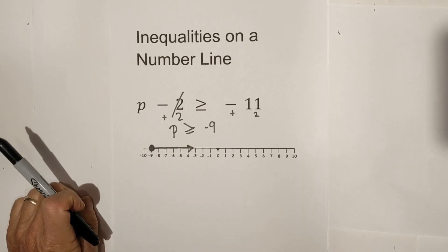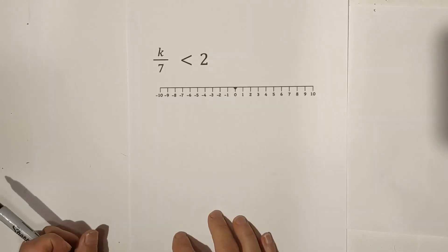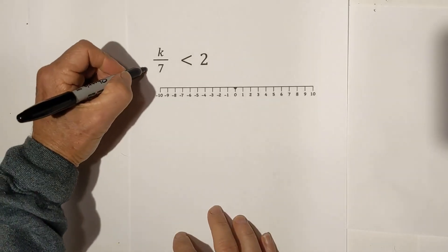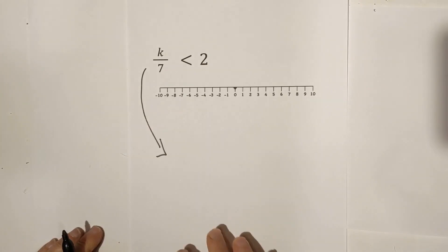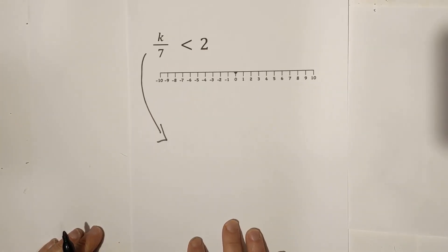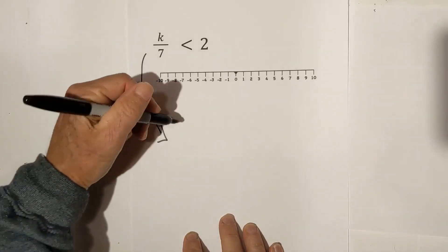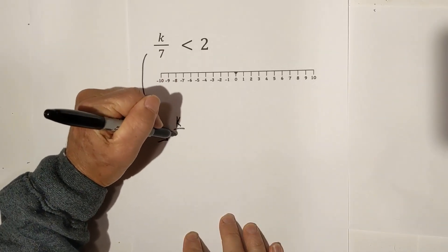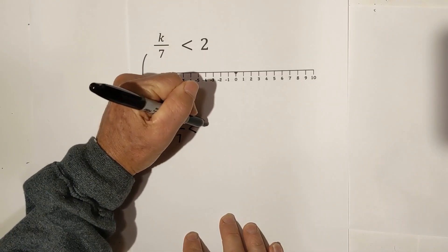Let's work another example. The next example is this, and I'm going to solve it down here, and then we'll work it on the number line. We have K over 7 is less than 2.